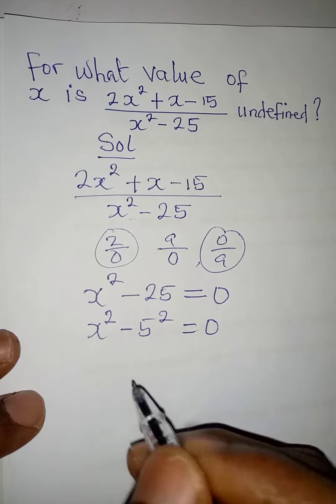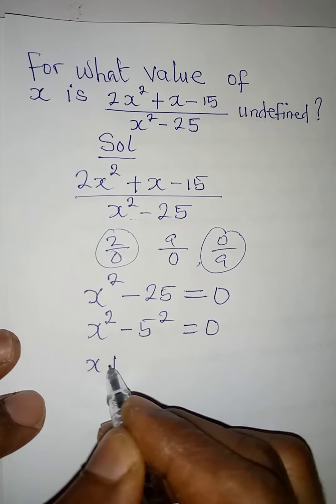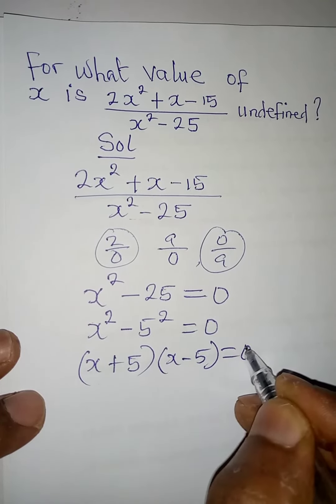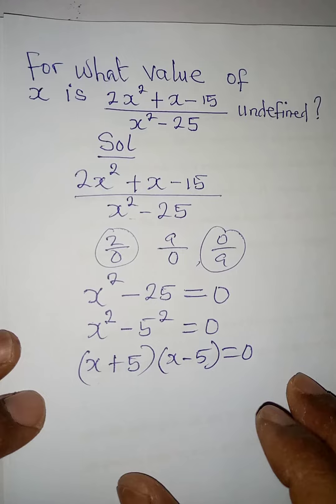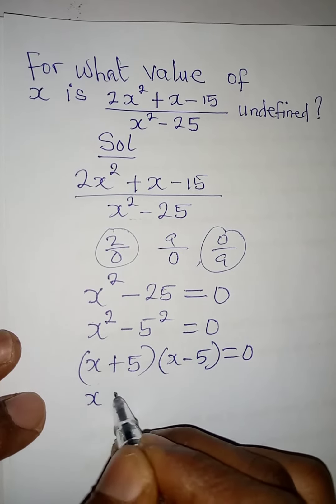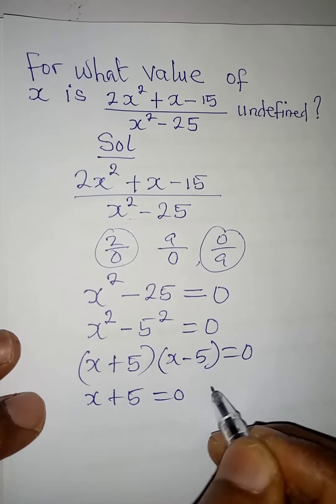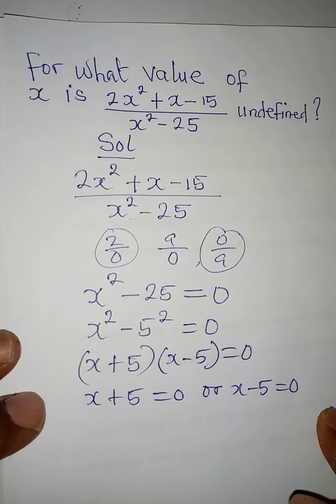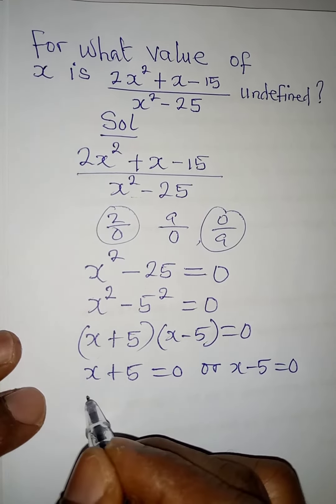Okay, so this is difference of two squares. And then this means that x plus 5 is equal to 0 or x minus 5 is equal to 0. If I collect like terms, x will be equal to 0 minus 5, and that is minus 5.